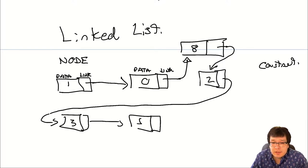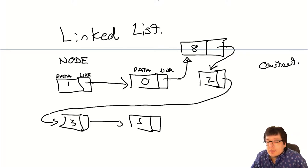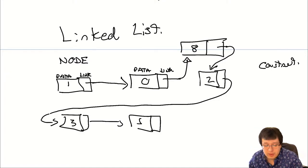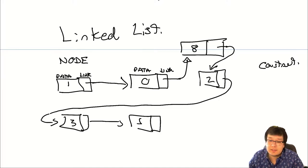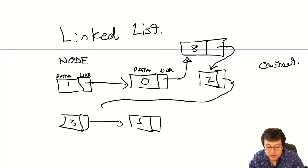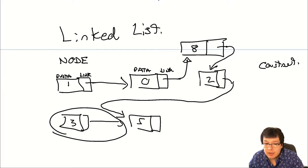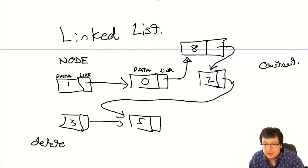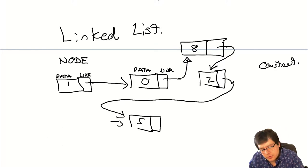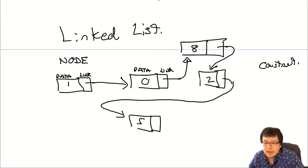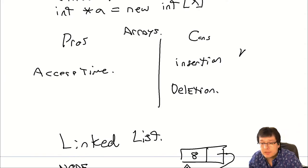Now let's talk about delete. Suppose I want to delete the 3. All I really have to do is change one pointer. I erase the link from 2 to 3, and instead make 2 point to 5 — and just cut 3 out. Now I have 1, 0, 8, 2, 5. However, since this is dynamically allocated, I want to call delete on that node so it's properly deallocated and I don't have a memory leak. Essentially it's very fast — you're only deallocating that one node, no shifting required. So you have fast insertion and fast deletion.